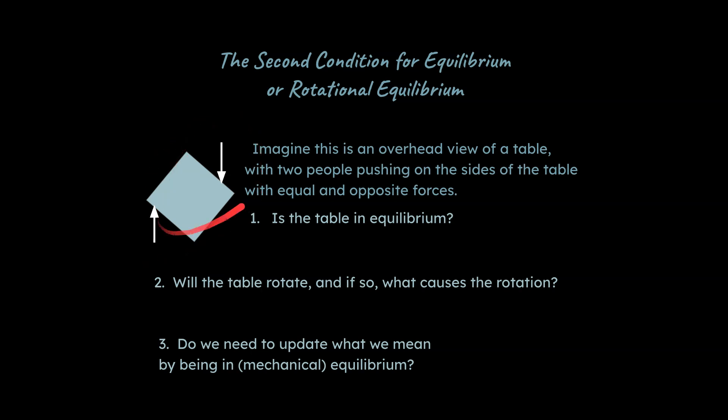So I want to start with a question. Let's imagine this is a table and two people are pushing on the table. Is the table in equilibrium? Now before you answer, consider these two forces are equal and opposite, and yes they are offset, but basically they are still equal and opposite forces. So what do you think?